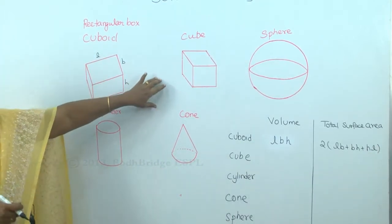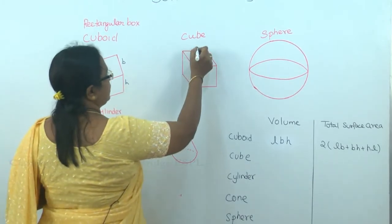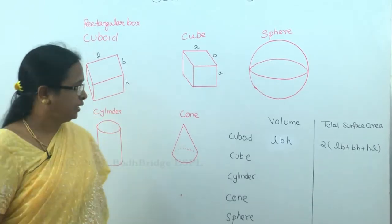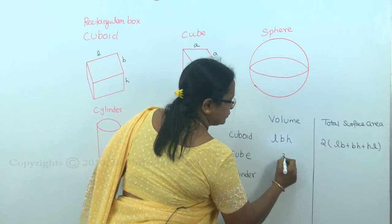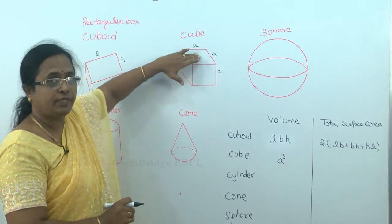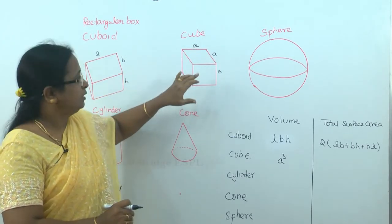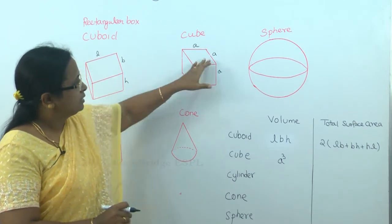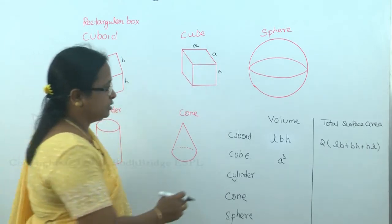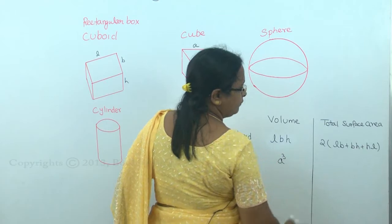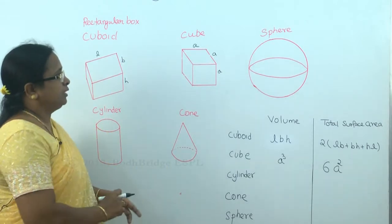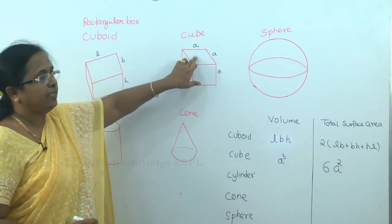For the cube, all sides are equal — consider the side as A. The volume is A × A × A = A³. For the total surface area, each face has area A², and since there are six faces, the total surface area is 6A².